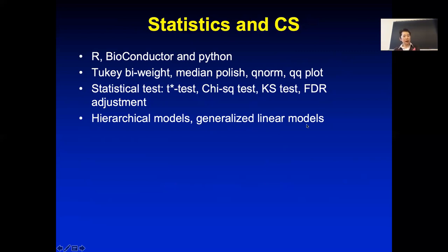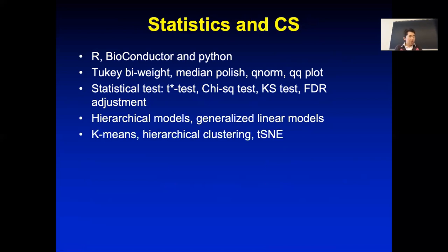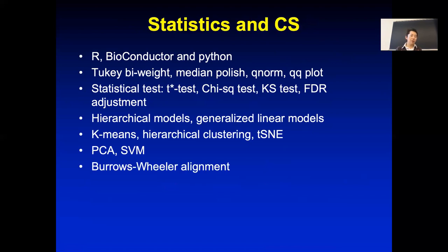We talked about generalized linear models using limma and edgeR to identify effects of different treatments or conditions when you have more than two conditions. We talked about clustering: k-means, hierarchical clustering, principal component analysis, t-SNE. We also talked about support vector machines and machine learning approaches. For read mapping we covered Burrows-Wheeler Alignment, and we'll briefly discuss suffix arrays and suffix trees for read alignment. We covered expectation maximization and Gibbs sampling for motif analysis.